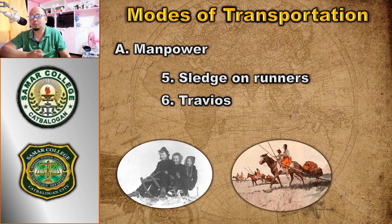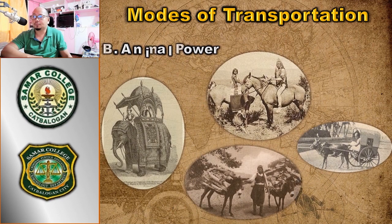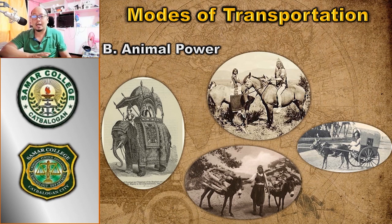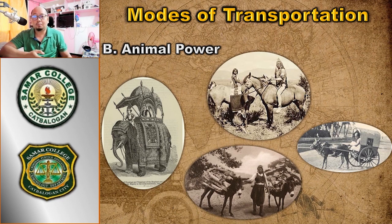Another mode of transportation is animal power — the domestication of animals. Animals were used to carry goods, especially large quantities that humans alone could not manage. Using animal power also made travel faster and easier.